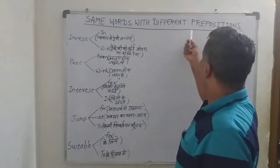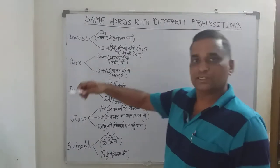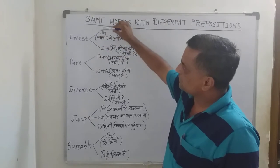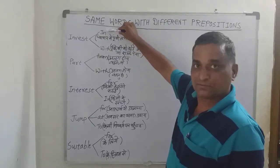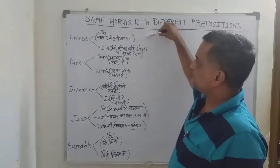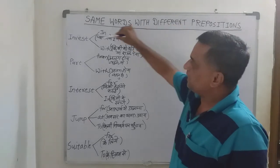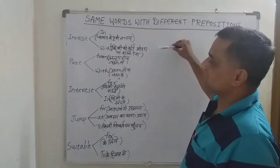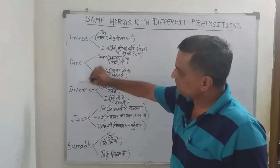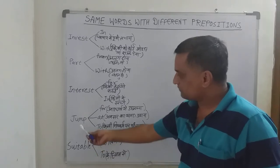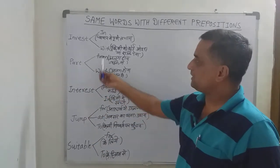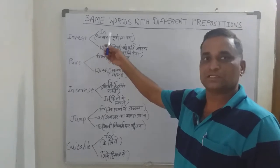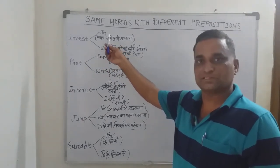So the topic is: same words with different prepositions. Here I have written the word 'invest.' When 'invest' is used with 'in,' the result will be different, and when used with 'with,' the sentence will be different. All these words have been used with different prepositions, and using different prepositions they make different sentences.